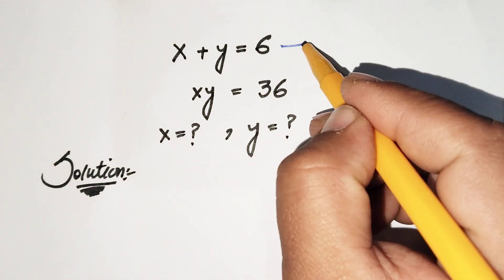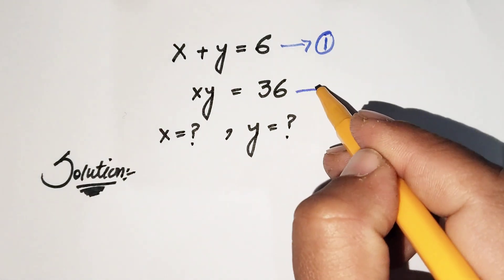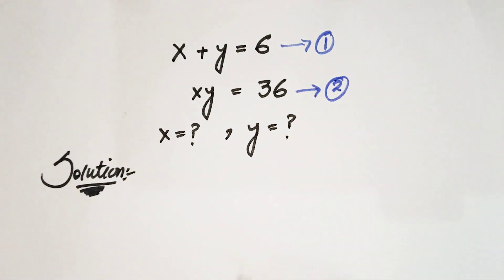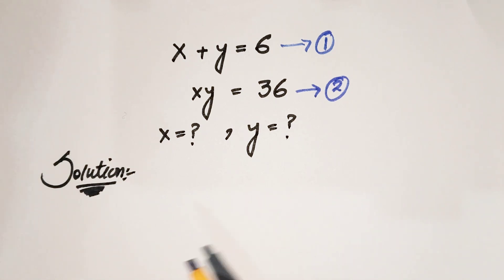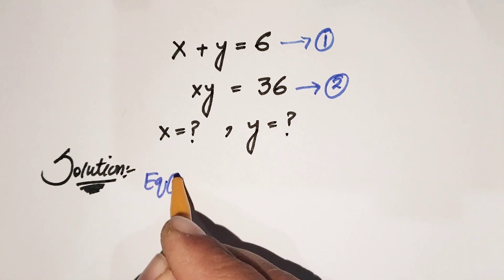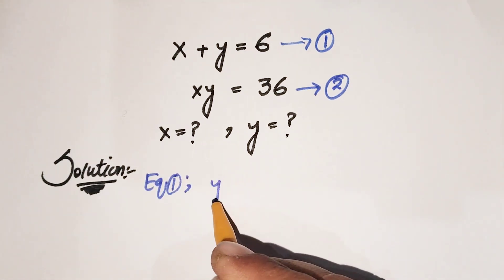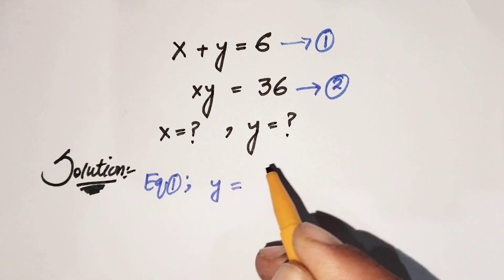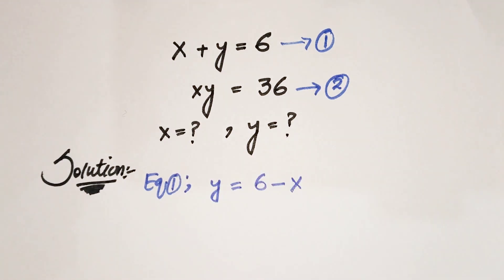First of all, we are going to label these as equation 1 and equation 2. Now we are going to write the first equation in terms of y. So if we write equation 1 in terms of y, we get y is equal to 6 minus x by shifting x to the other side.